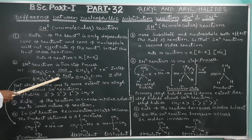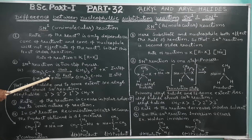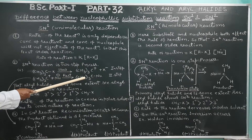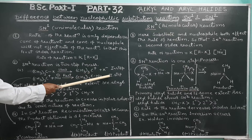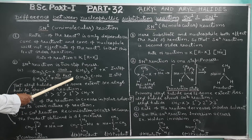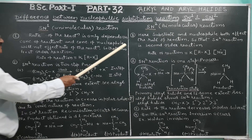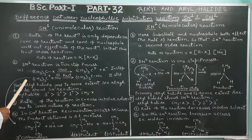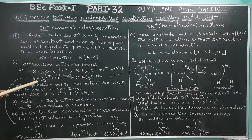In the second step of SN1, the nucleophile attacks the carbocation (carbonium ion). This is the fast step and leads to product formation. So SN1 proceeds in two steps, while SN2 is a one-step process.